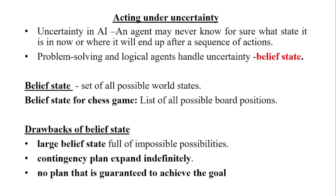The problem-solving and logical agents handle uncertainty by keeping track of a belief state. A belief state is a representation of the set of all possible world states, and generates a possible plan that accounts for all potential outcomes. For example, the belief state for a chess game is the list of all possible board positions. The drawbacks of belief state are: no matter how unlikely, the agent must consider all explanations for the sensor observations, which causes a large belief state full of impossible possibilities.